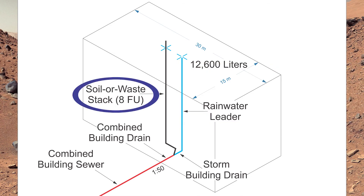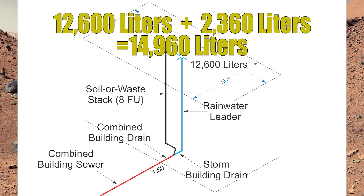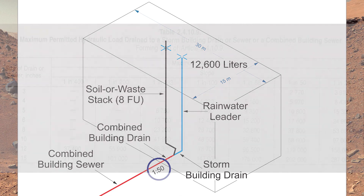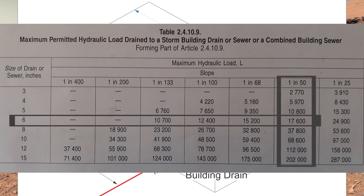Now in this example, our soil-away stack is only draining down 8 fixture units. Remembering that code clause: if I have 260 fixture units or fewer, I need to account for 2,360 liters to be added into the combined building drain. So: 12,600 liters plus 2,360 liters equals 14,960 liters draining into the combined building drain. It has a grade of 1 in 50, so I look to table 2410.9, go down the 1 in 50 column, and at the correct liter load it looks like I am six inches.